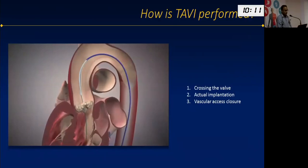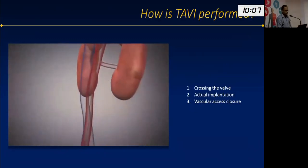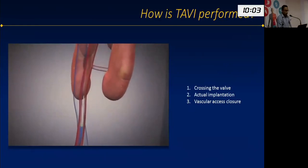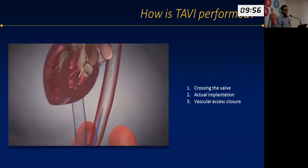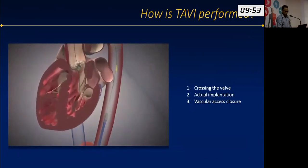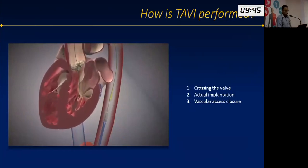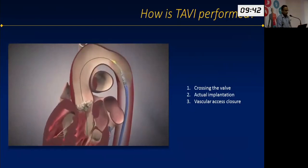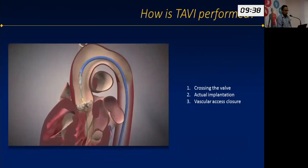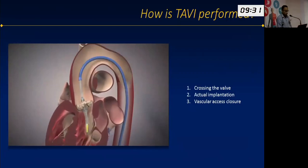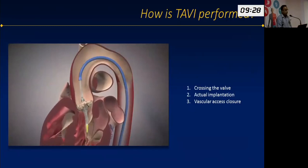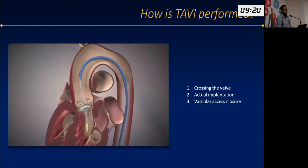For vascular access, a sheath approximately 8 mm in diameter is introduced and also closed percutaneously. A balloon dilatation of the valve is initially performed. The valve is then manipulated through the descending aorta and taken across the annulus. For a balloon-expandable valve, deployment is achieved simply by inflating the balloon. This inflation is done during rapid pacing at about 200 beats per minute so that cardiac output drops and the valve remains stable across the aorta.